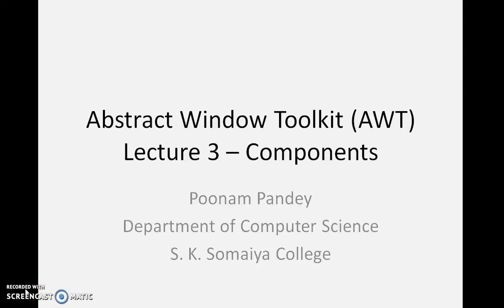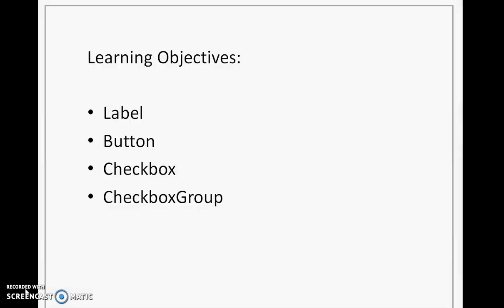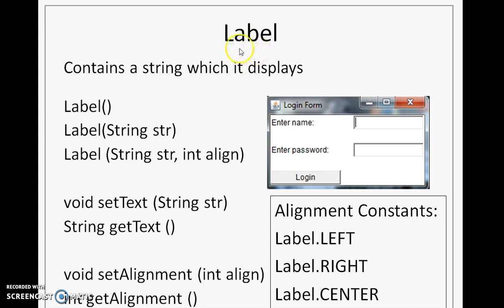In this lecture, we are going to see some basic components of the java.awt package. Specifically, we are going to look at Label, Button, Checkbox, and CheckboxGroup. Let's first look at the Label component. It is available as a class in java.awt package and it will help you to display a string in a GUI — for example, 'enter name' and 'enter password' are strings displayed to give information about other components.